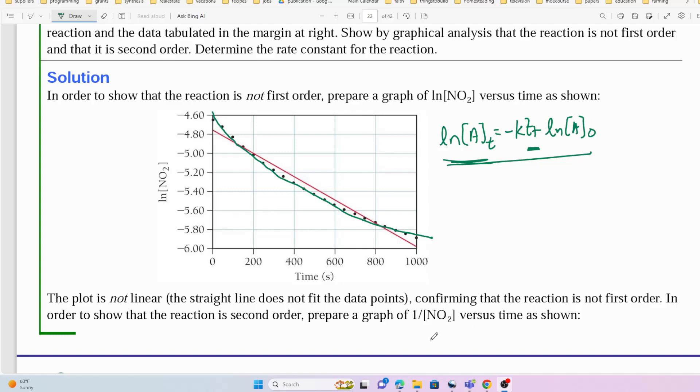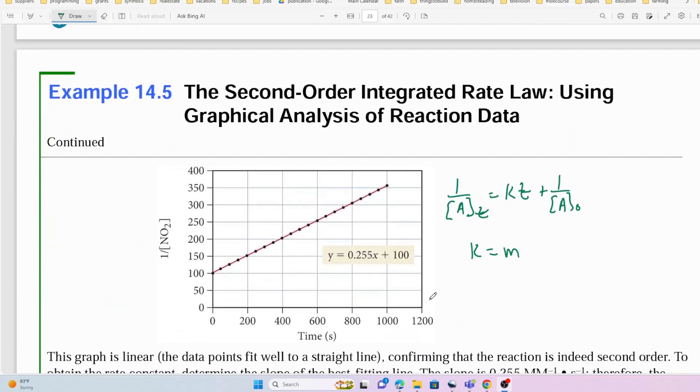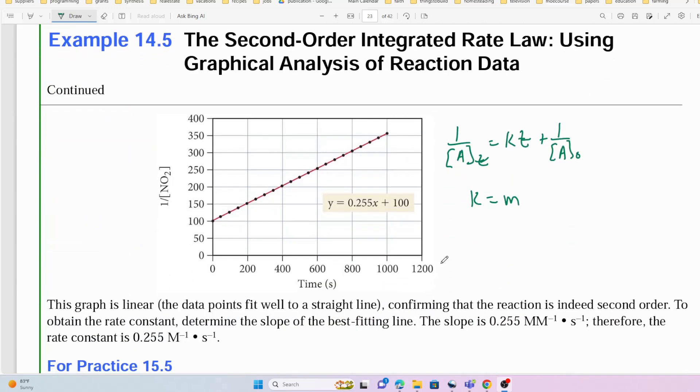So here's our second order integrated rate law, where 1 over the concentration of A at time t is equal to kt plus 1 over the concentration of A at time zero. This corresponds to the equation for a line, y equals mx plus b.